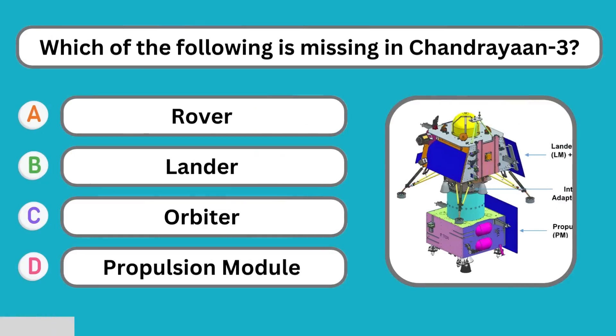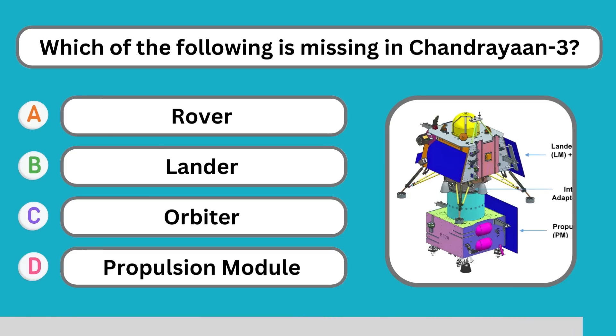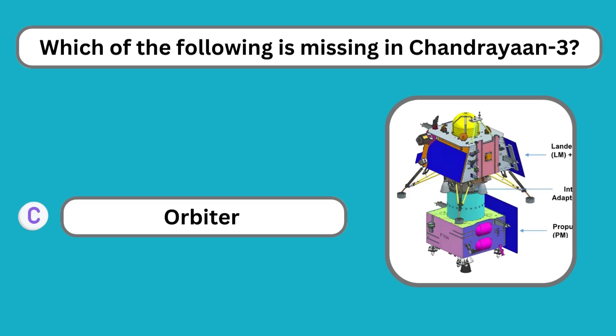Which of the following is missing in Chandrayaan-3? Orbiter.